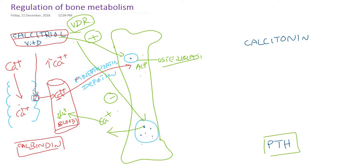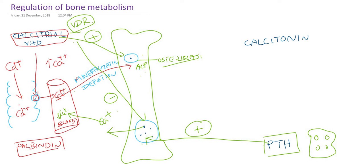Parathormone is released from the parathyroid glands, which are located behind the thyroid gland. Parathormone stimulates osteoclast. Whenever osteoclast — the bone-destroying cells — are stimulated, they release calcium to the circulation. The stimulus for parathormone release is decreased blood calcium, that is, decreased plasma calcium. Whenever there is decreased plasma calcium, the parathyroid gland releases parathormone. This parathormone stimulates osteoclast, causing destruction of bone cells, so calcium is released to the circulation.